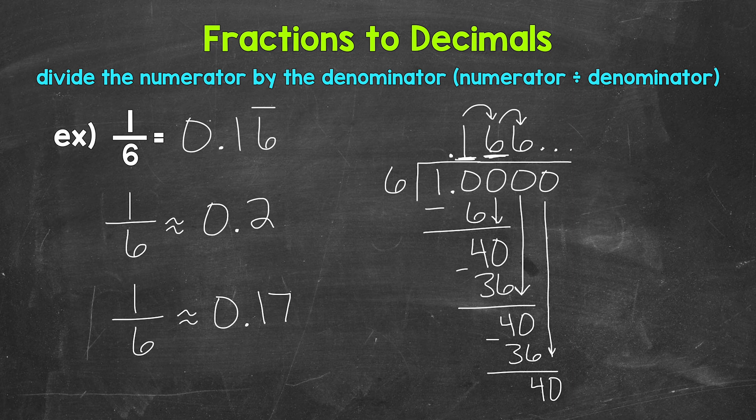So some different options there as far as writing out a repeating decimal. We can use a bar above a repeating digit or digits to show that they repeat, or we can round.